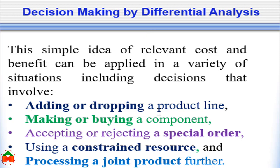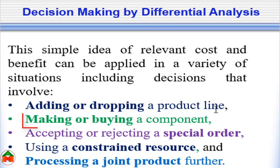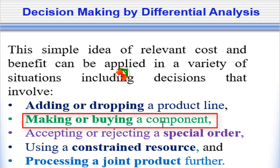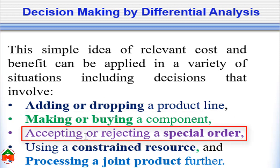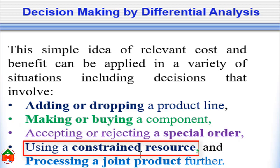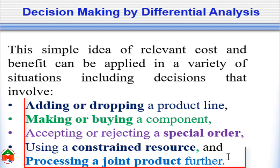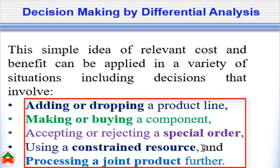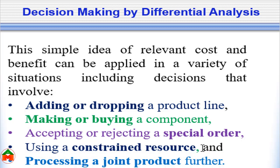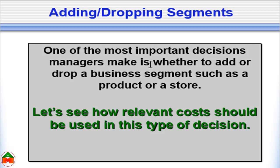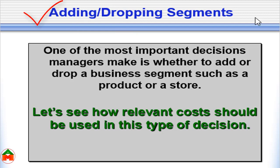By utilizing differential analysis, we can take various material decisions, such as: adding or dropping a product line, making or buying a component, accepting or rejecting a special order, using a constrained resource, or processing a joint product further. In this tutorial, among these decisions, we will demonstrate adding and dropping a segment or product line.